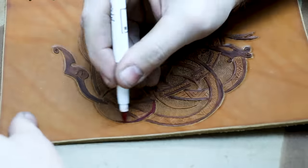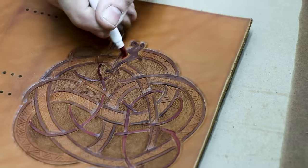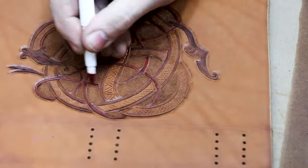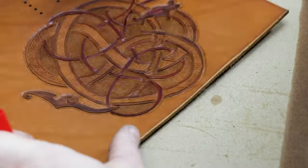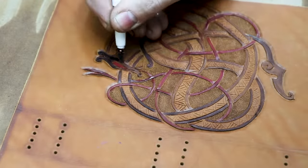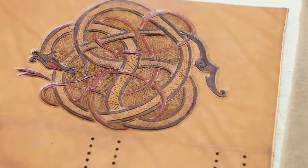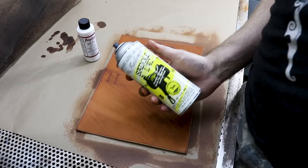What's going to end up happening here is I'm going to apply a finish to this that will act as a resist, so that we can put our antique on it. Now because I've used dye to color it, that resist is going to permeate a little bit and darken everything. Now if I had used paint here, everything would probably be a little brighter.